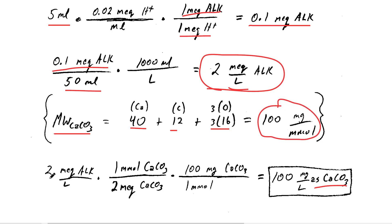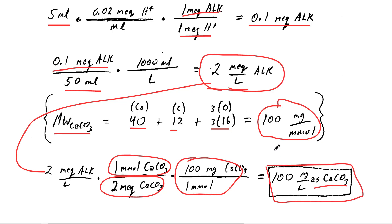We take that two milliequivalents of alkalinity and convert using the fact that two milliequivalents of calcium carbonate are in every one millimole of calcium carbonate. Then we convert millimoles to milligrams using the molecular weight that we just saw, and voila, we have 100 milligrams per liter as calcium carbonate.